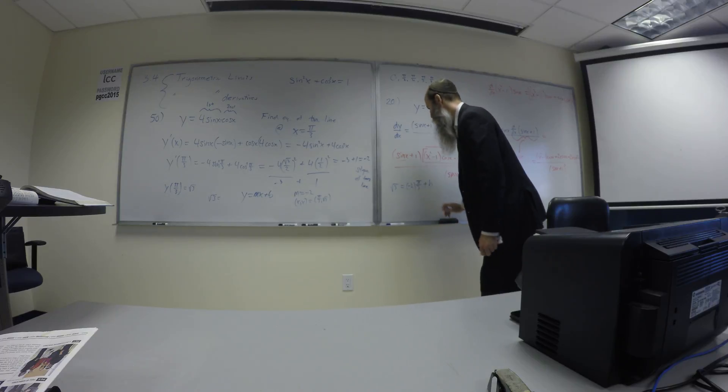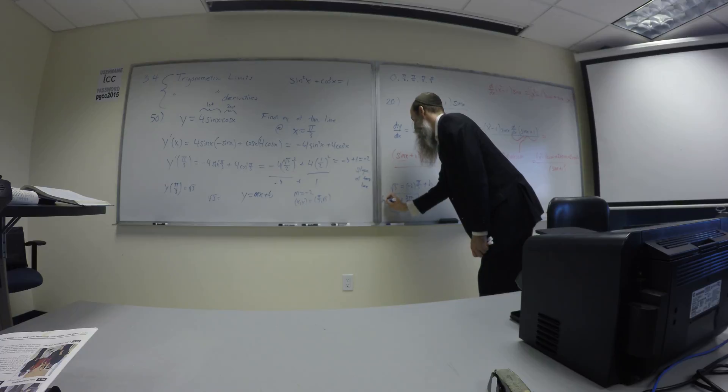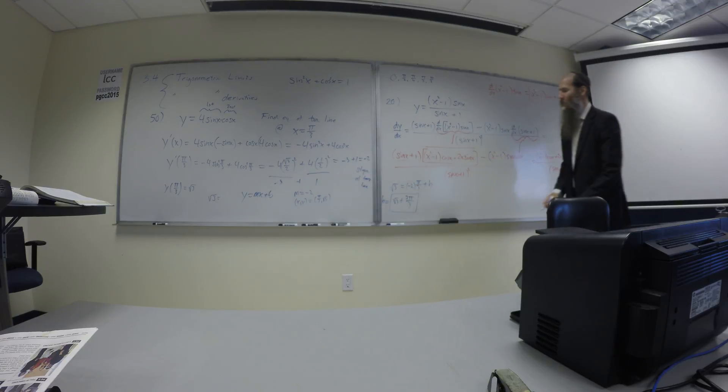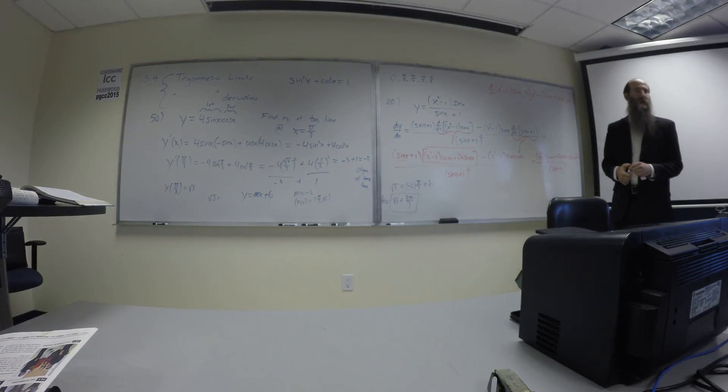So what's b? b is going to be root 3 plus 2 pi on 3. But it's a negative. Oh, but it's a negative. Okay? So strange looking b. But it is what it is.